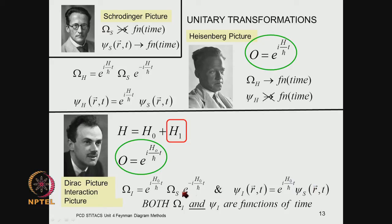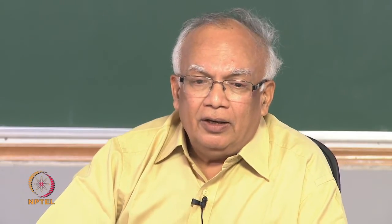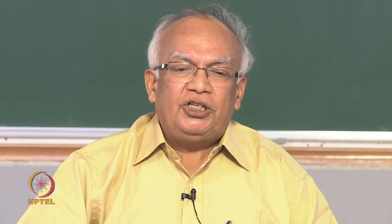In the interaction picture both the operators and the wave functions depend on time, unlike the Heisenberg picture where only operators are time dependent, or the Schrödinger picture where only the wave functions are time dependent. But the physics remains invariant. The important difference is that in the Dirac picture the transformation operator consists only of the soluble part H_0 of the Hamiltonian.